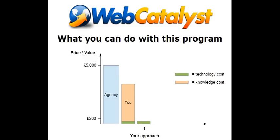Or you could build your own sites. You'd buy the technology, buy the Web Catalyst programme, and build yourself a website — but then also use it to build a second, third, fourth, fifth, sixth website for another product of yours. The great thing about Web Catalyst is that with each subsequent website you don't have the knowledge cost anymore, because when you buy this programme you can use that knowledge over and over again. You don't have to buy the programme again — all you have to do each time is buy a new domain name, buy some new hosting, and off you go.